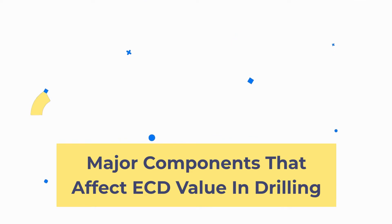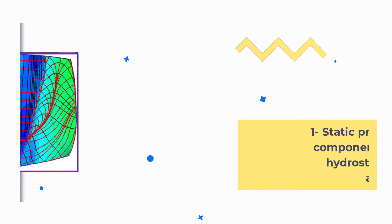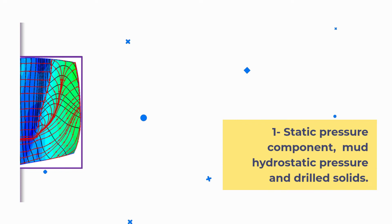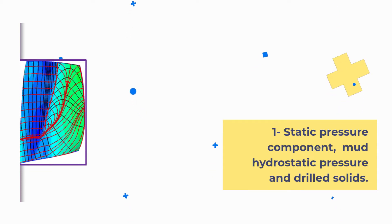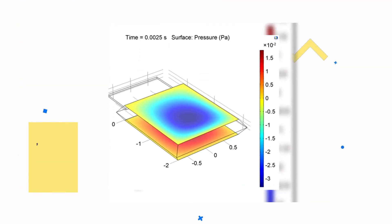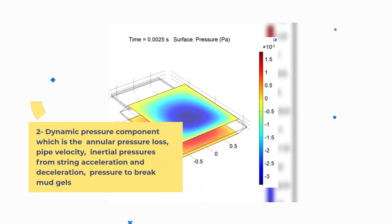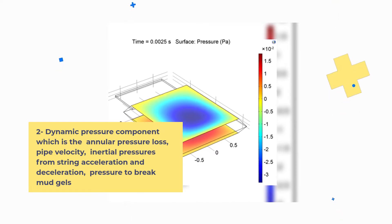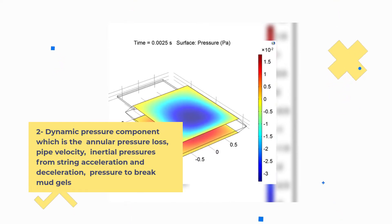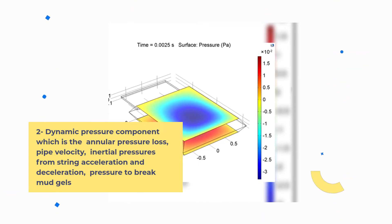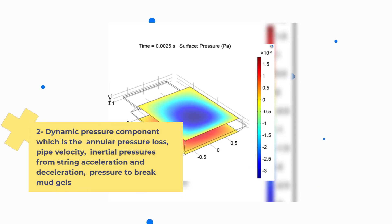Major components that affect ECD value in drilling: One, static pressure component — mud hydrostatic pressure and drilled solids. Two, dynamic pressure component, which is the annular pressure loss, pipe velocity, inertial pressures from string acceleration and deceleration, and pressure to break mud gels.